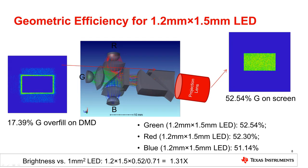If we use the 1.2 mm by 1.5 mm LED on the same optics, the efficiency drops to around 52%. But due to the LED emitting area being almost twice as big and twice as bright, the total brightness will be significantly higher than the engine with the 1 mm by 1 mm LED.